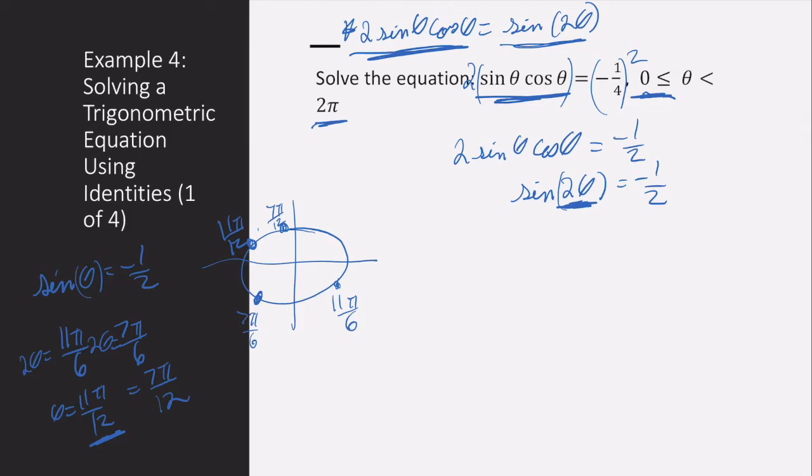I have that theta equals eleven pi over twelve, plus, how often is this going to repeat? Well, sine repeats every two pi, right? But it's going to occur again. So plus pi over k. Because we had to pull out a factor of two. Originally it would have looked like eleven pi over six plus two pi over k, but then we divided everything by two to get here.